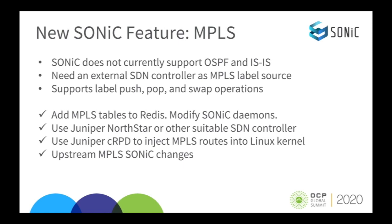Juniper is proud to be the first to offer MPLS on Sonic. We had to overcome a few issues. First, Sonic does not currently support OSPF and ISIS, the typical label sources for MPLS. Consequently, we must have an external SDN controller as the MPLS label source. Right now we support basic MPLS operations: push, pop, and swap. To integrate MPLS into Sonic, we had to add new MPLS tables to Redis and modify the Sonic daemons to act on those tables. As the SDN controller, we used Juniper Northstar or another suitable SDN controller. We leveraged CRPD, Juniper's containerized routing protocol suite, to inject MPLS routes into the Linux kernel. And we will upstream MPLS changes to the Sonic open source community.